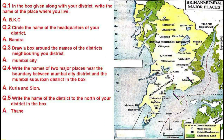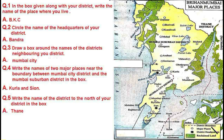Now this is the map of Brihanmumbai — the district map of Mumbai. Here there are two districts: Mumbai Suburban District and Mumbai City District. Mumbai is one of the biggest cities of India and is also the capital of Maharashtra. Here there is an index shown in a box. This line indicates the district boundary — see how it separates Mumbai City District from Mumbai Suburban District.